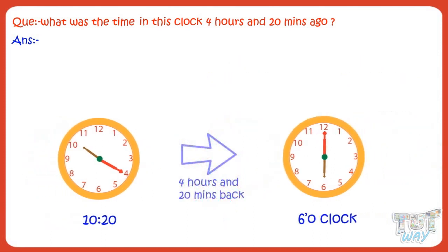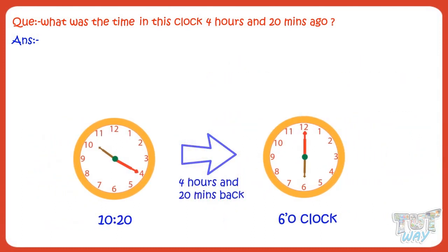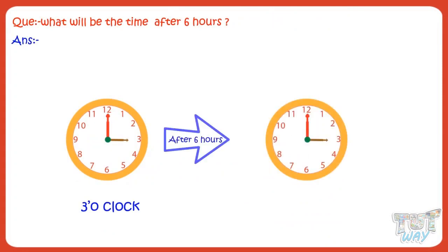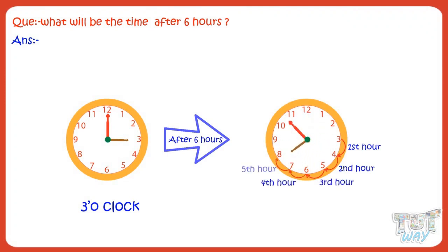Now let me ask you a few questions in a quick fashion. It is 3 o'clock — what will be the time after 6 hours? Move the hour hand: 3 to 4, 4 to 5, 5 to 6, 6 to 7, 7 to 8, 8 to 9. So 6 hours later, it will be 9 o'clock.